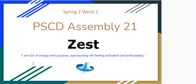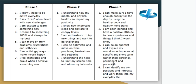This week's assembly is all to do with zest — it's about being full of energy and purpose, approaching life being activated and enthusiastic. These are the success criteria for the different phases. In phase one: you need to be active every day, you're excited to learn something new when faced with challenges, you commit to something a hundred percent, always do your best, and move on from problems, frustrations, and setbacks.